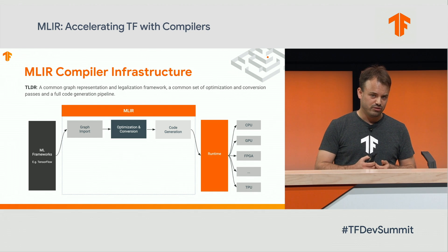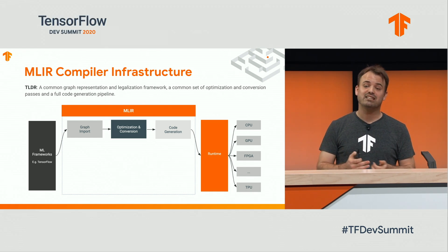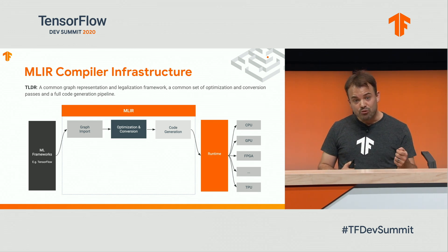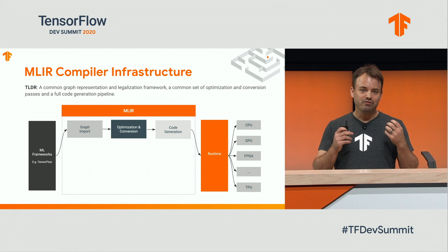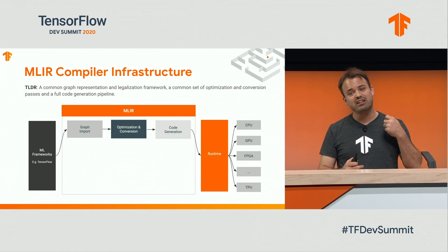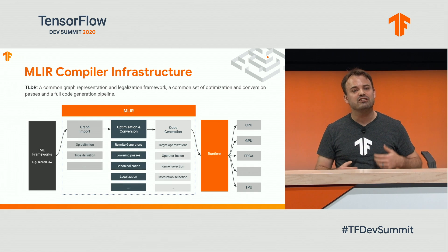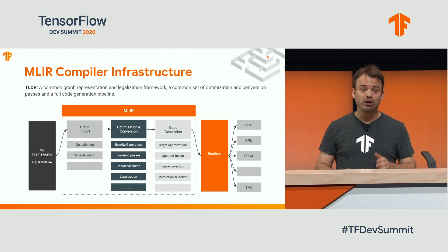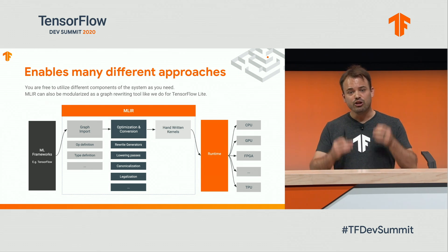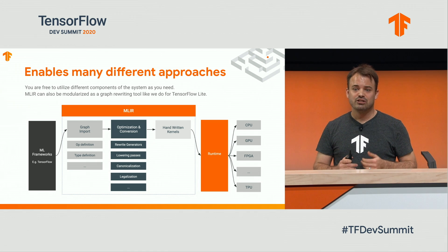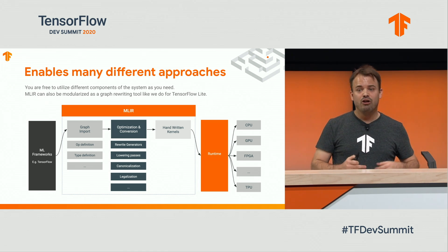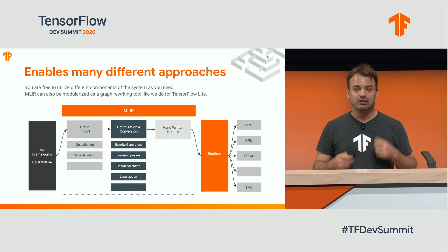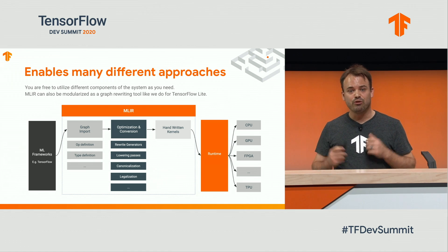As the previous slide showed, we can and will be using MLIR to do many tasks in TensorFlow: from graph optimizations, operation rewrites and lowerings, graph transformations, and bridging frameworks and components, to code generation. You can think of MLIR as a common graph representation and legalization framework — a common set of optimizations and conversion passes, as well as a full code generation pipeline. But importantly, MLIR is modular, so you can tailor it for your use case and use what you need to solve your problems. For example, you can reconfigure MLIR for graph rewriting — that's how we use it for the new TensorFlow to TensorFlow Lite converter, using just the parts we actually need.